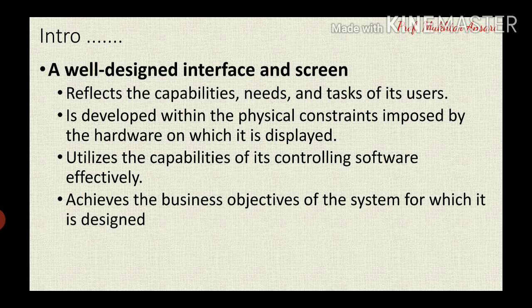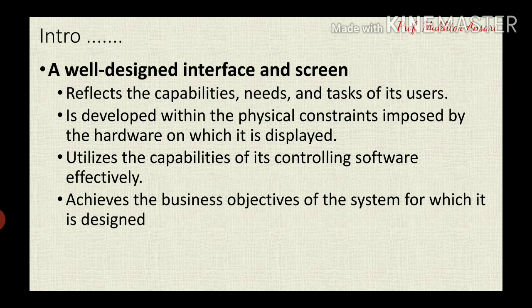The third point is that it utilizes the capabilities of its controlling software effectively. The last point is achieving the best business objectives of the system for which it was designed — the purpose for which we are designing the screen must be fulfilled. If the business objectives are not fulfilled, there is no use in designing the screen, so we must design it in a proper way to achieve those objectives.